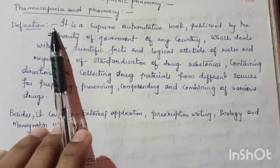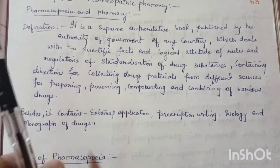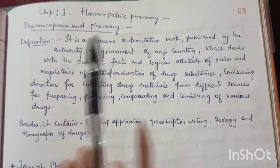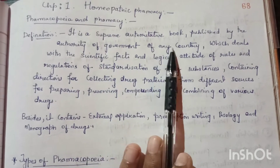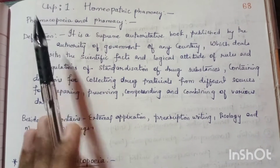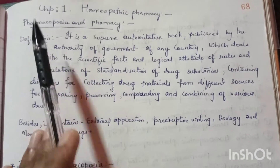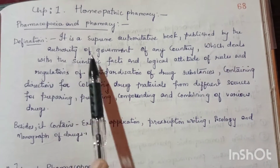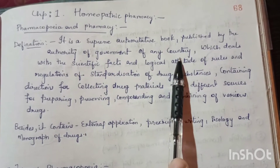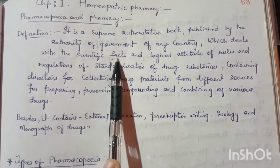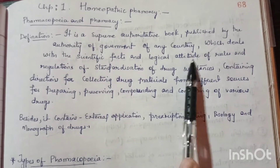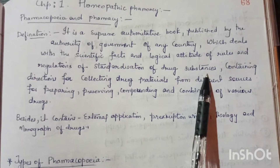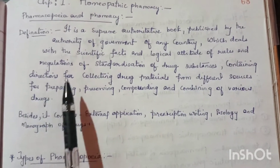First of all, we need to know what is pharmacopoeia. Pharmacopoeia's definition is a supreme authority book, published by the authority of the government of any country. It deals with scientific facts and logical attitudes of rules and regulations of standardization of drug substances.